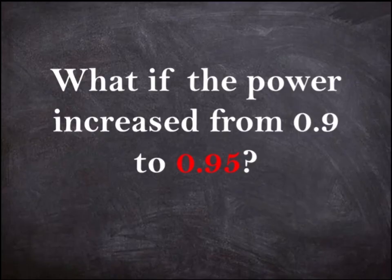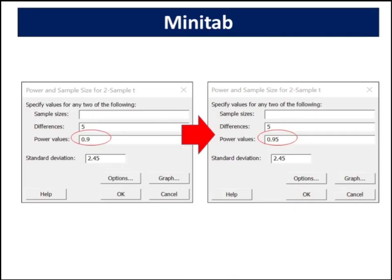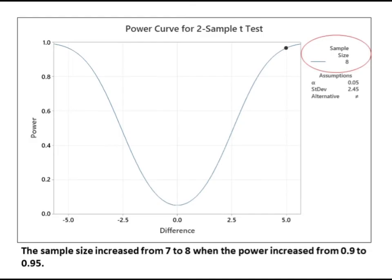What if the power increased from 0.9 to 0.95? What is the sample size required? Let's change the power from 0.9 to 0.95 in Minitab. The sample size increased from 7 to 8 when the power increased from 0.9 to 0.95.